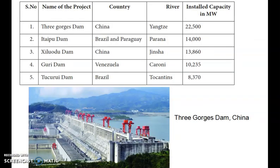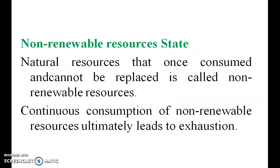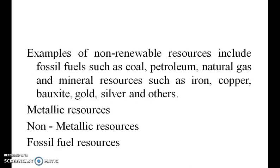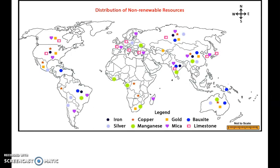These are some of the famous dams all over the world. Non-renewable resources: natural resources that once consumed cannot be replaced are called non-renewable. For example, coal, petroleum, natural gas, and mineral resources such as iron, copper, bauxite, gold, silver and others are non-renewable resources. The map indicates the distribution of non-renewable resources including iron, copper, gold, bauxite, silver, magnesium, mica and limestone.